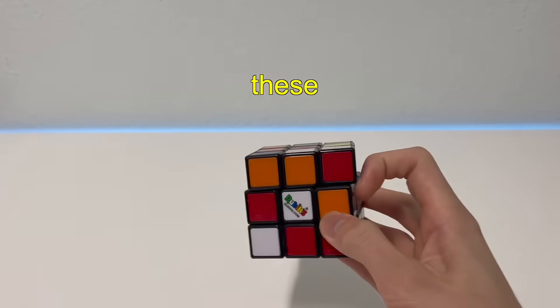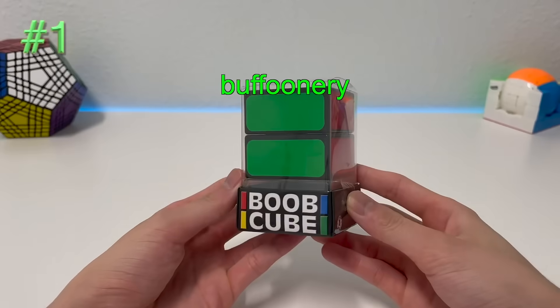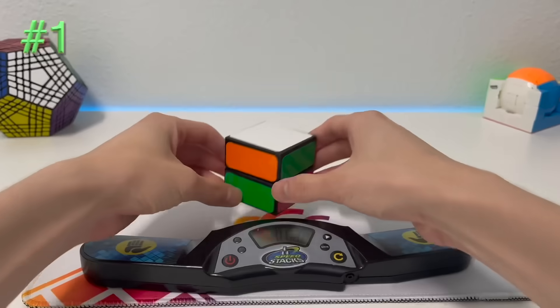If you can't solve a Rubik's cube, try out these seven easy puzzles. Number one, the buffoonery cube. Literally a one-year-old can do this.